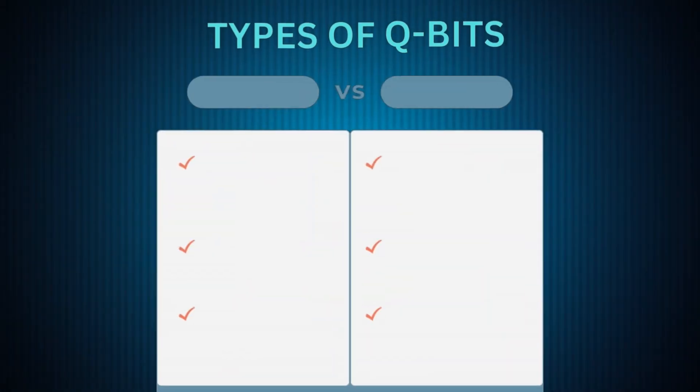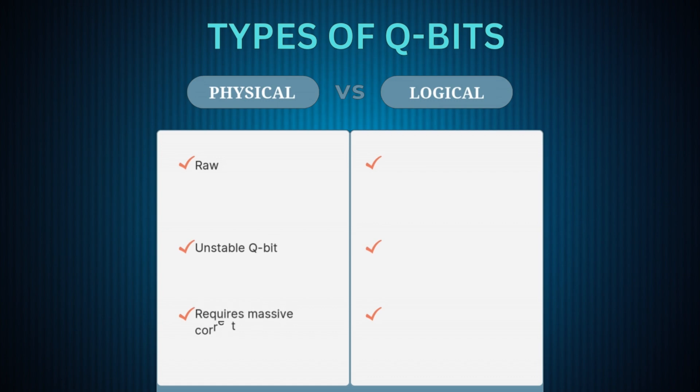A physical qubit is a raw and unstable qubit that requires massive error correction, whereas a logical qubit is a perfect and error-free qubit that performs the real calculation.